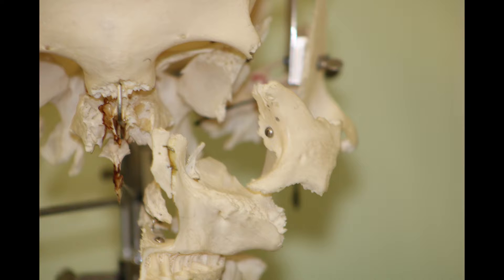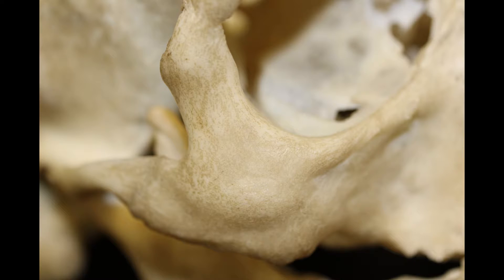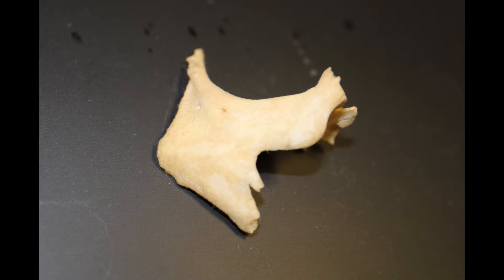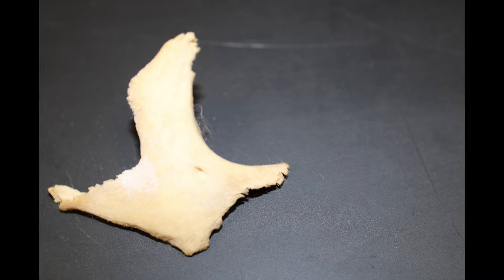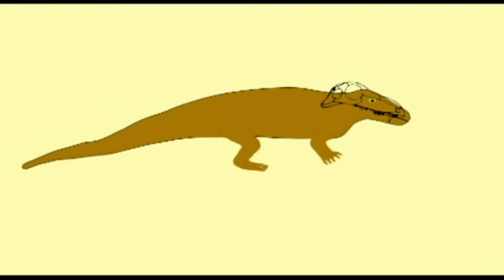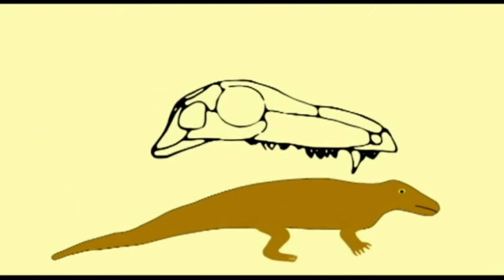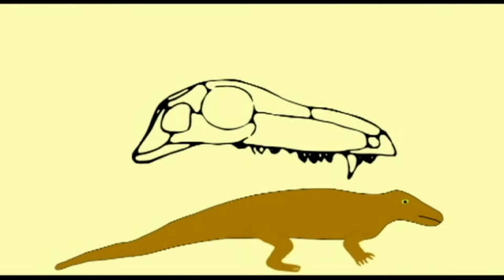The first reptiles lacked this zygomatic arch, so they were called anapsids. They were missing a hole for these jaw muscles, and as a result, jaw muscles were short and the bite could not be very powerful.